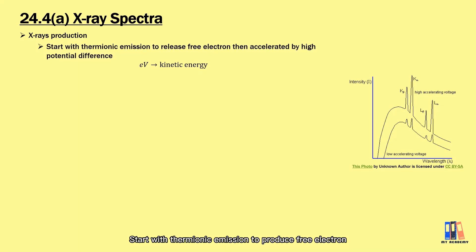It is quite similar to the cathode ray production which you have learned in semester 2. It starts with thermionic emission to produce free electrons, then accelerated by high potential difference. From here, it involves the conversion of electric potential energy to kinetic energy of the electron.